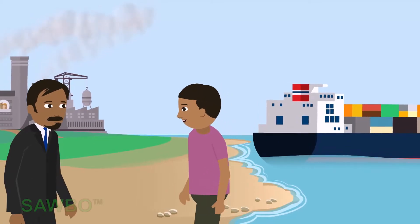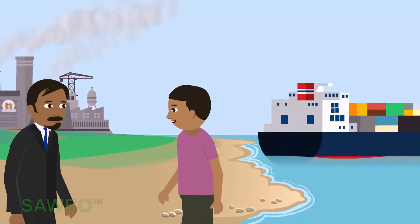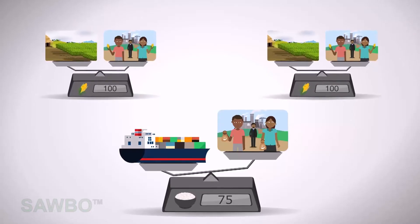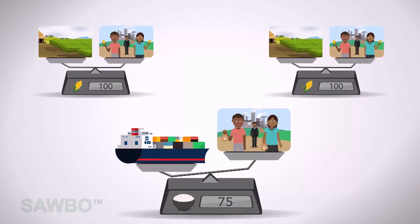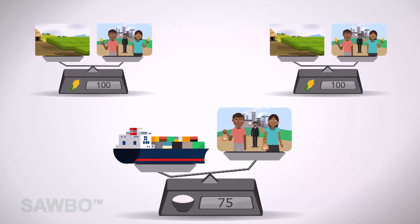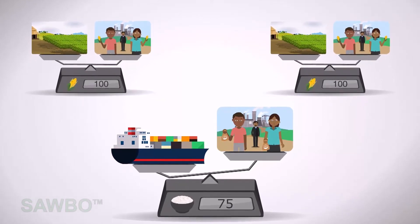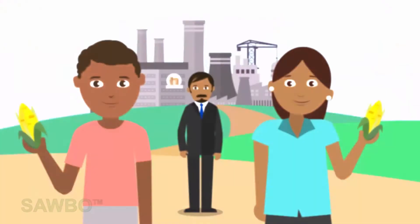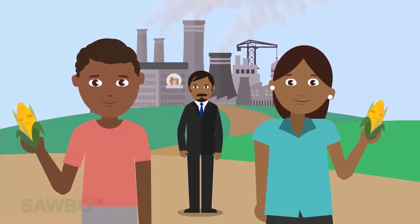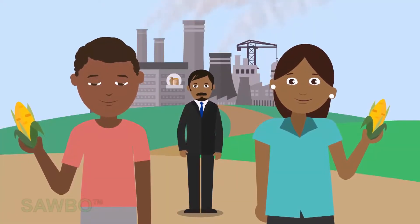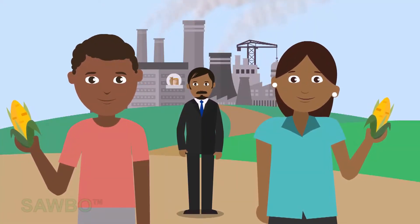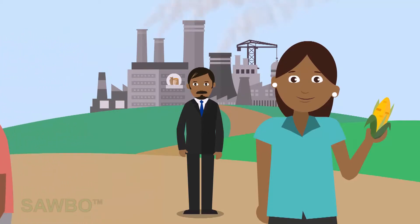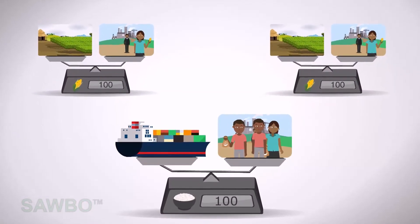Some rice traders come from overseas and offer rice to the local maize consumers, who are happy to buy the cheap rice because maize is expensive. Some maize consumers become rice consumers. This causes less demand for maize because they now consume rice.